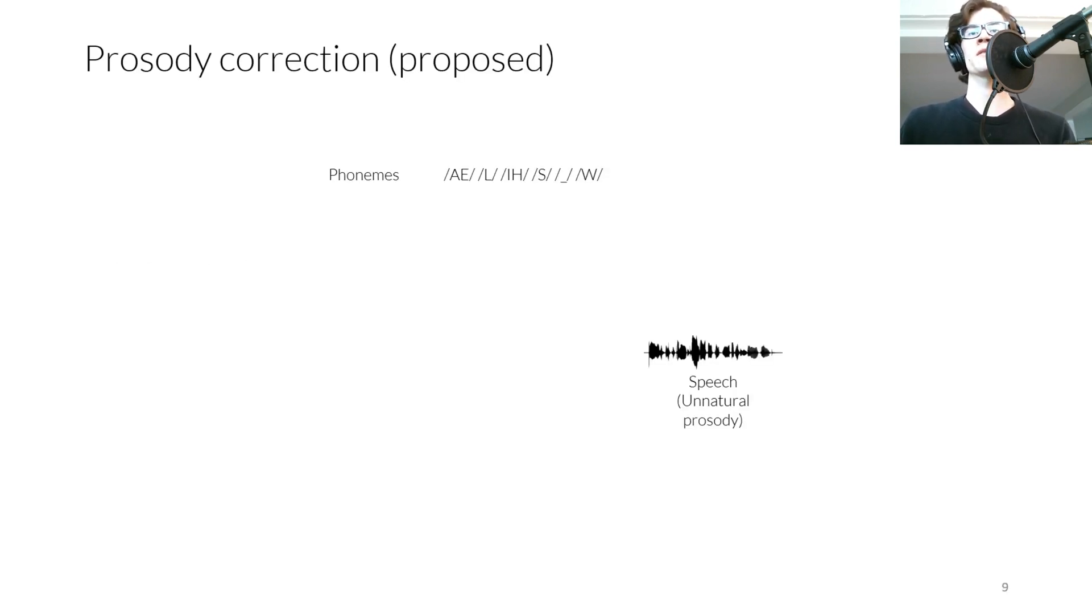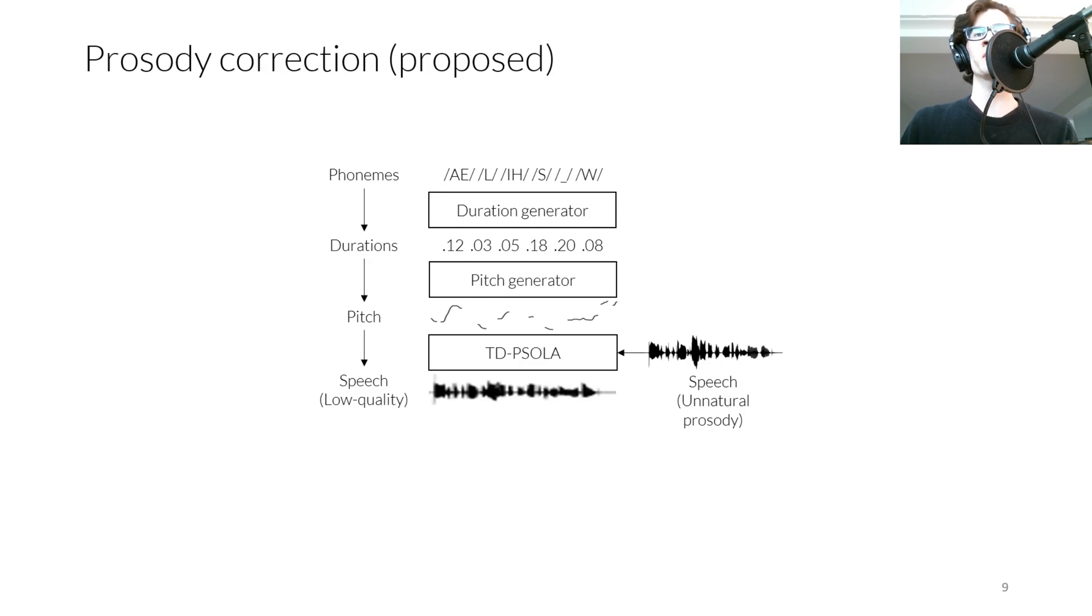Now we discuss our proposed method. Given input speech that has been naively copy-pasted and a corresponding phoneme sequence, our method produces prosody-corrected speech with four steps. First, we use a small duration generator neural network to produce a duration in seconds for each phoneme. Next, we condition a pitch generator on the phonemes, which are upsampled according to the predicted durations. Given the predicted pitch and phoneme durations, we use the DSP-based TDP-SOLA to perform pitch shifting and time stretching to match the target prosody. Lastly, we use a neural speech enhancement system, HiFiGAN, to remove some artifacts caused by TDP-SOLA.